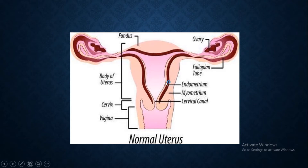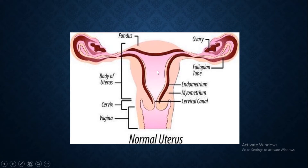The endometrium is the innermost layer, the middle layer which is the myometrium, and the serous layer. This cavity inside is known as the uterine cavity, which increases its volume when the lady is pregnant so that the baby can fit here.